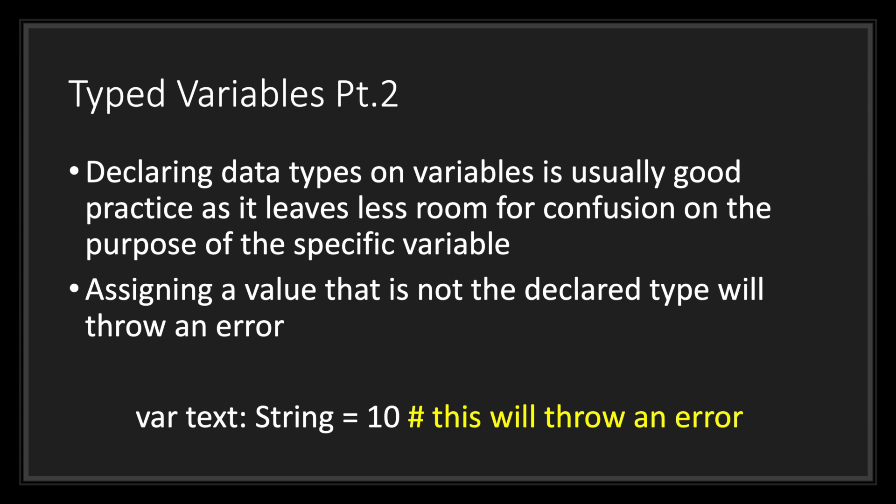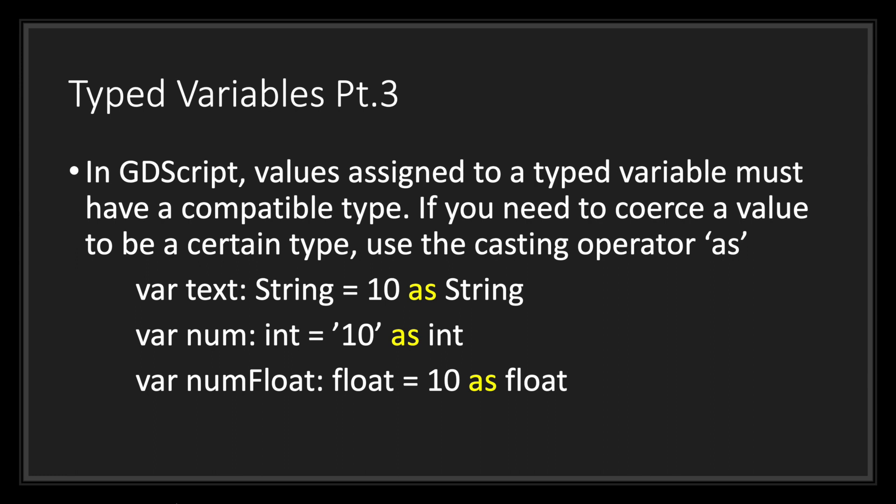Let's take a quick look. Here we have a variable called text and we've explicitly assigned it the data type of string, but we are trying to assign it a literal integer value of 10. This line of code will not work — it will throw an error because GDScript is expecting a string data type to be assigned to our variable called text. Values assigned to a typed variable must have a compatible type.